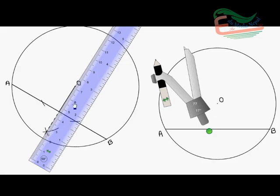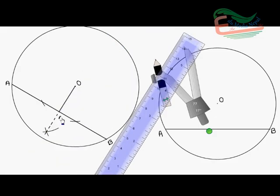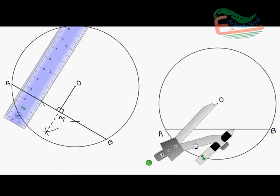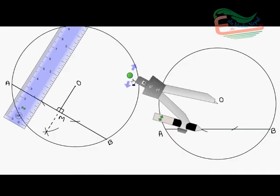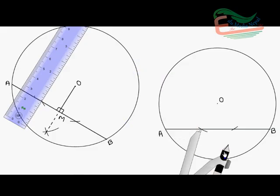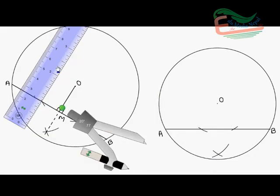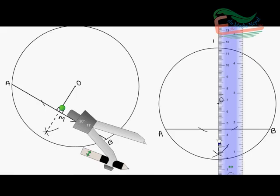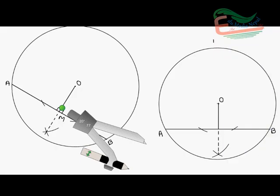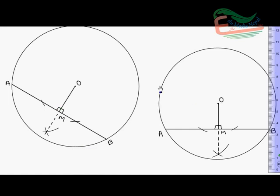This line is perpendicular with chord. Suppose that this is M, then here is 90 degrees, it is perpendicular. Similarly, in next circle also we will do same thing. Cut in two places, again from these points we cut in this way.